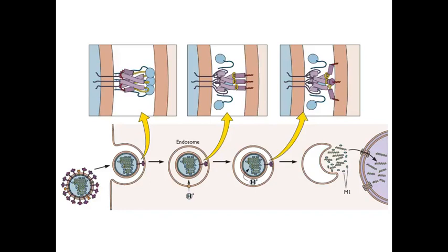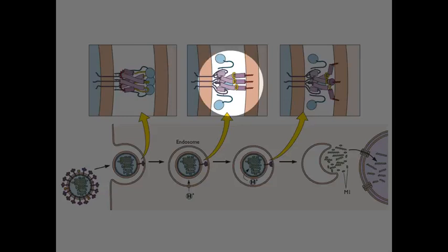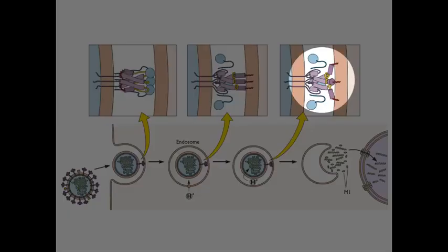Back to the influenza virus story. I want to tell you one more thing about this entry step, which is quite interesting. The virus is taken into the endosome at low pH. The HA undergoes a conformation that puts the fusion peptide into the cell membrane. It hairpins, and fusion occurs.